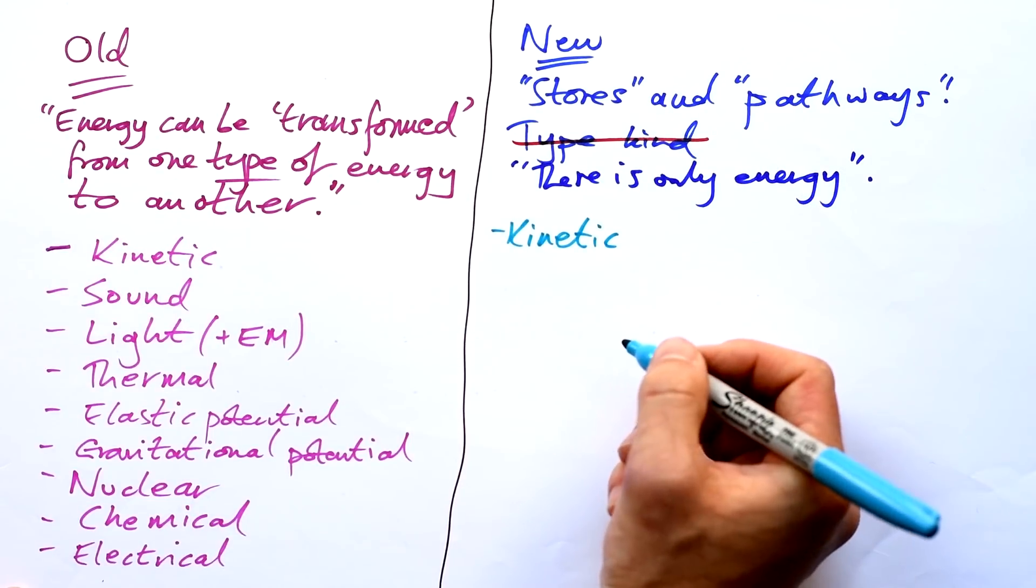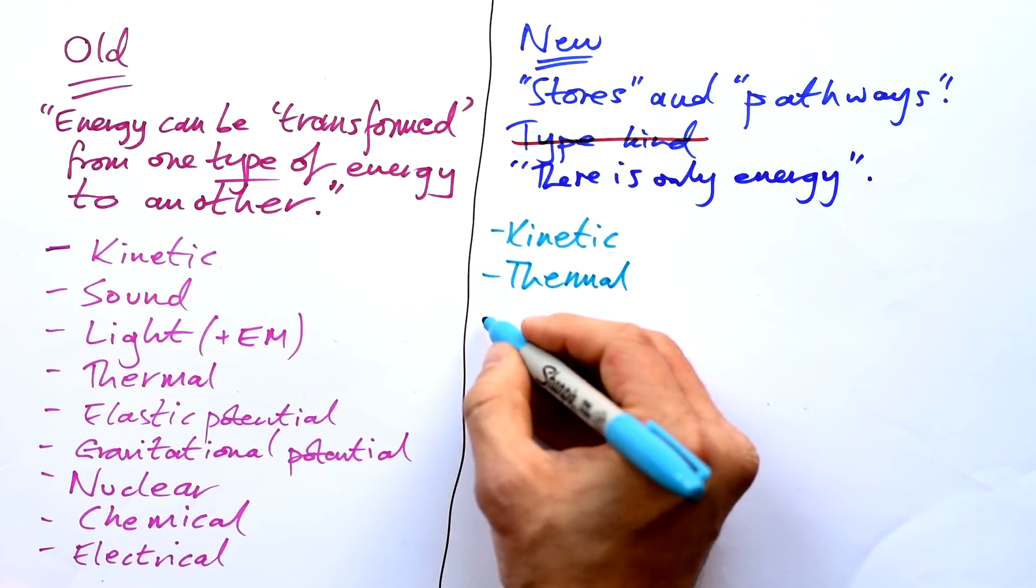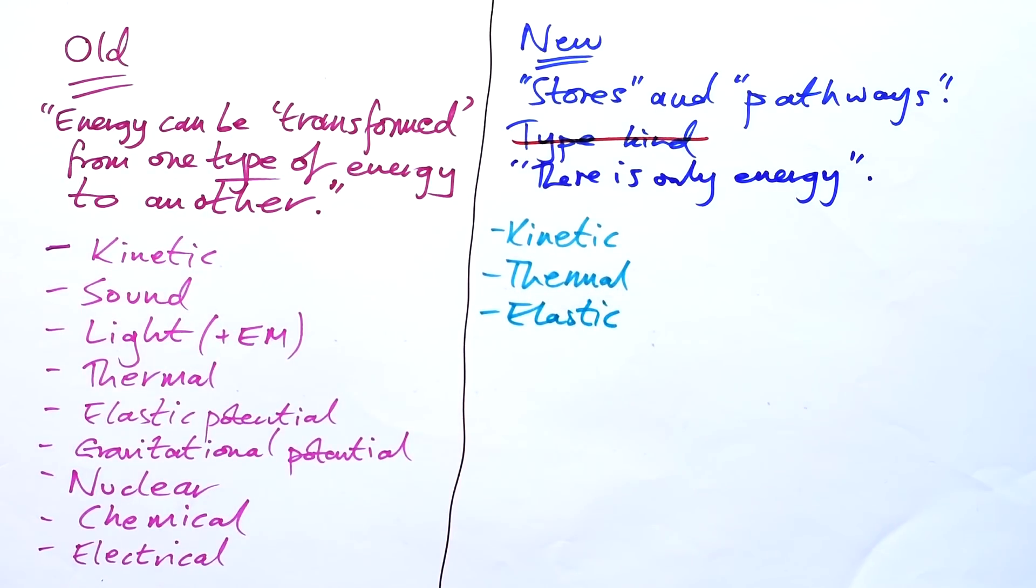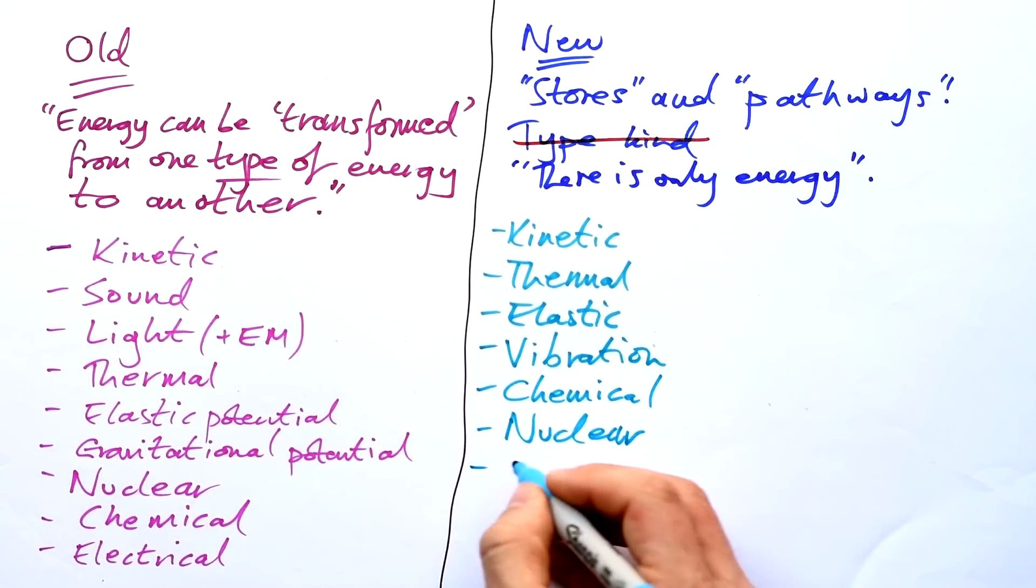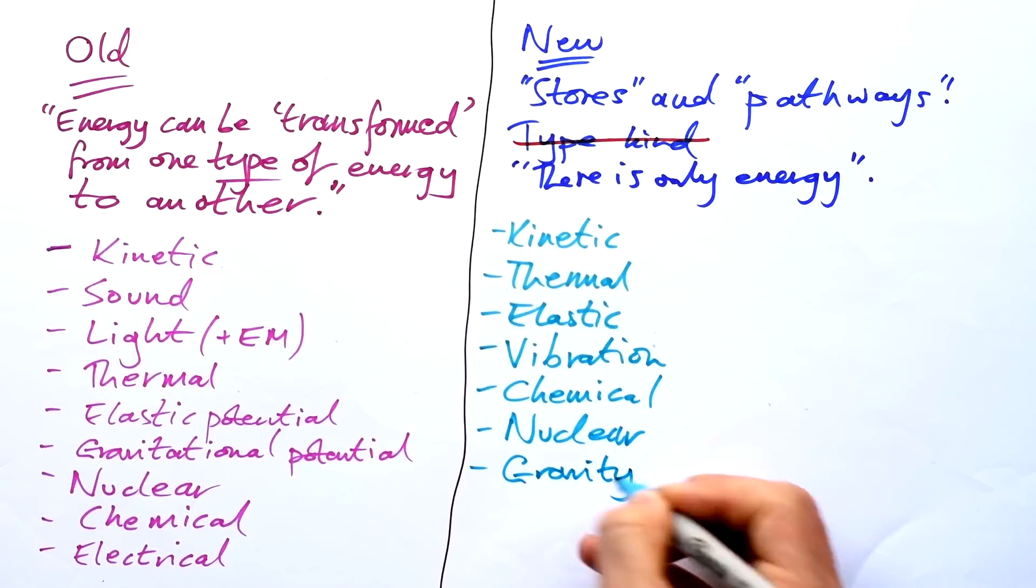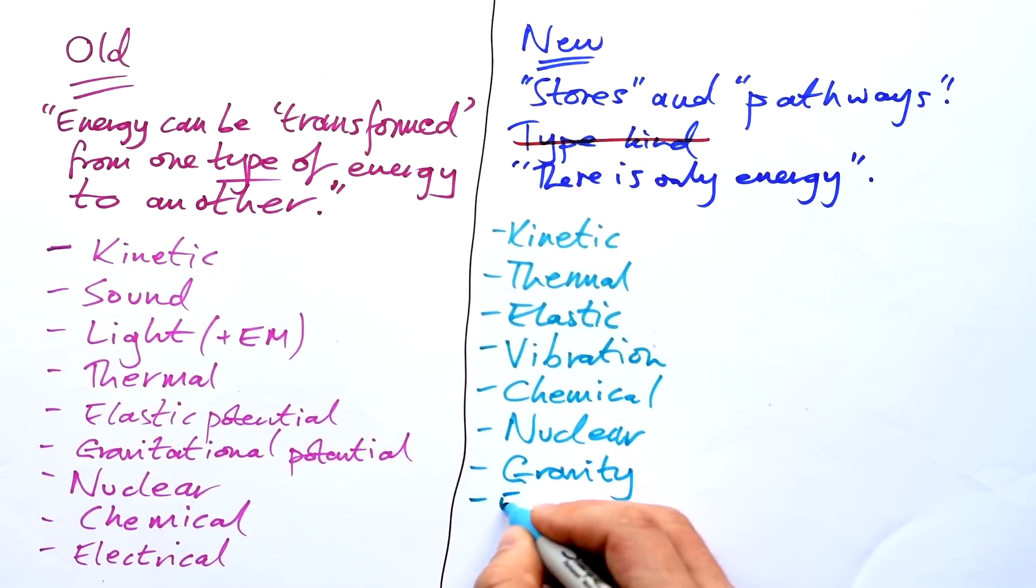The new way of talking about energy is in terms of stores and pathways. Stores of energy and pathways by which energy is transferred from one object to another. You are no longer allowed to say type or kind of energy. They say there are no types or kinds, there is only energy. So we have our stores of energy: kinetic, thermal, so far so good, elastic - no longer called elastic potential energy, vibration, chemical, nuclear, gravity - no longer gravitational potential, gravity energy, and electric.